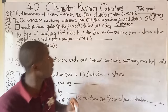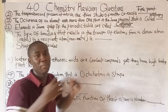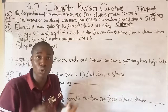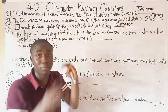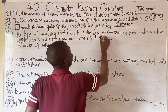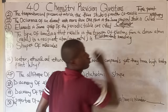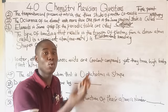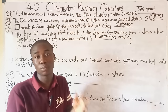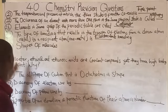In electrovalent bonding, the electron transfers from the metal (donor) to the non-metal (recipient). There are various types of bonds: electrovalent bond, covalent bond (ordinary covalent and coordinate covalent bond). Coordinate covalent bond can also be termed dative bonding, and each has specific properties and characteristics.